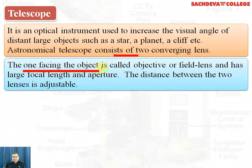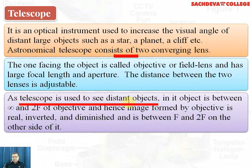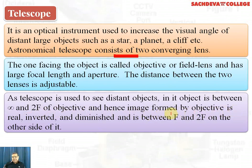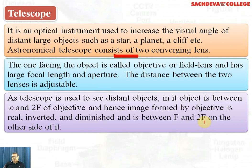The lens facing the object is called the objective or field lens; it has a large focal length and large aperture, with more curvature. The distance between the two lenses is adjustable because they are fixed in a movable tube. The object is between infinity and 2f of the objective, so the image formed by the objective is real, inverted, and diminished — smaller in size but obtainable on a screen between f and 2f on the other side of the convex lens.